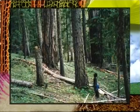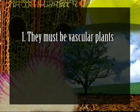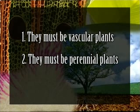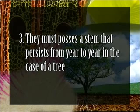Wood comes from trees and is of plant origin, but not all plants produce timber. Plants may be woody or non-woody. To qualify, they must be vascular plants possessing specialized tissues of phloem and xylem, as plants without vascular tissue cannot produce wood. They must also be perennial plants living for a number of years, with a persistent stem known in the case of a tree as the bole.